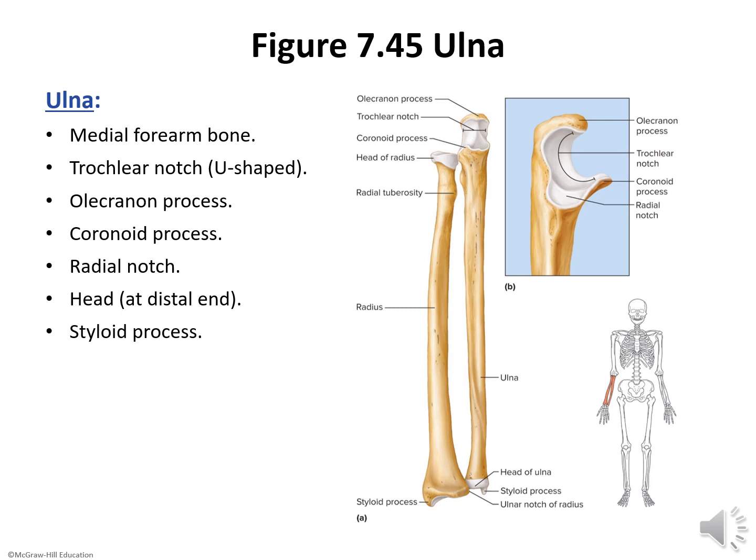Similarly, the coronoid process, just below the trochlear notch, fits into the coronoid fossa of the humerus when the elbow bends. At the distal end of the ulna, its knob-like head articulates laterally with a notch of the radius called the ulnar notch, and with a disc of fibrocartilage inferiorly. This disc, in turn, joins a wrist bone, the triquetrum. A medial styloid process at the end of the ulna provides attachments for ligaments of the wrist.